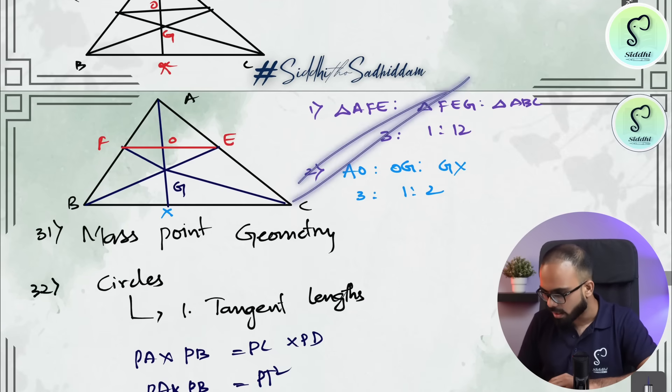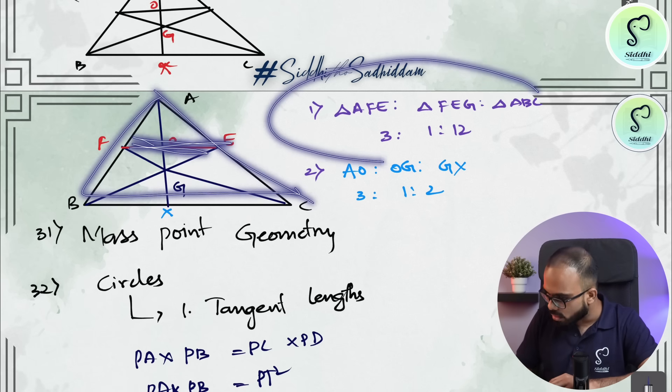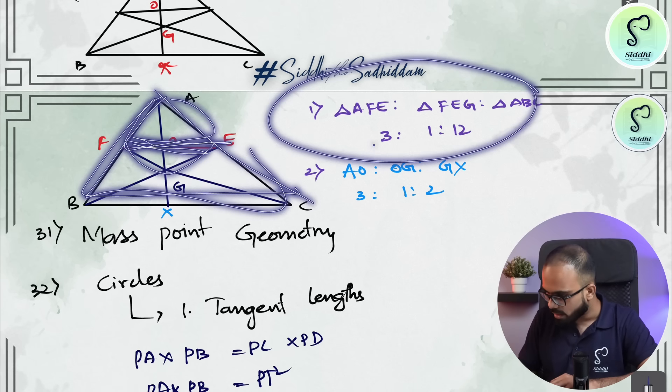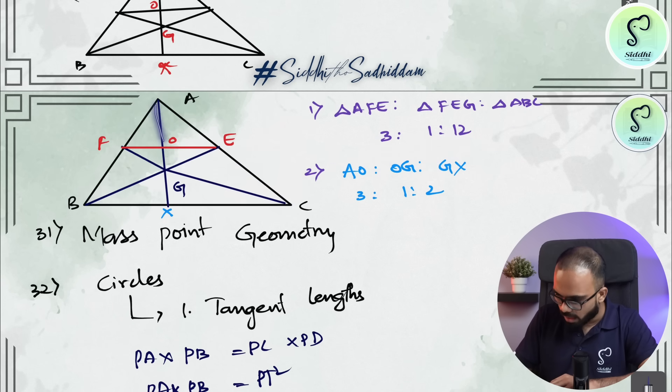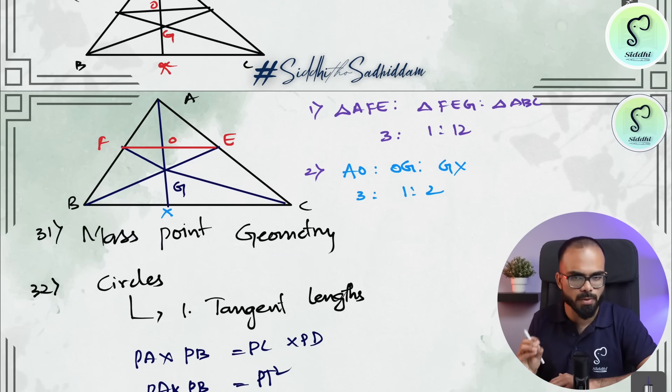Then medians questions are extremely important. In median, if this is a median diagram and you are joining F and E, the relation of triangle AFE ratio, FOE ratio, ABC. This is important. Next, AO ratio, OG ratio, GX. This is also important. You will have questions on this. Then questions on mass point geometry.